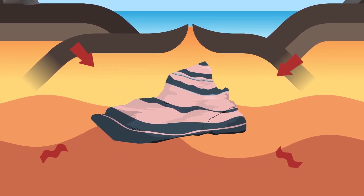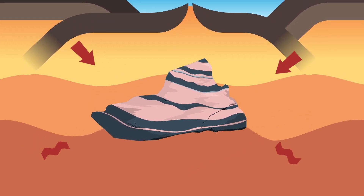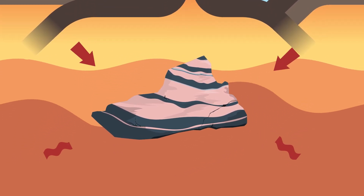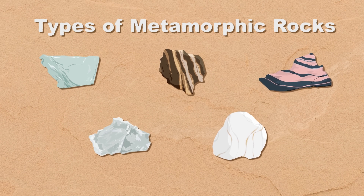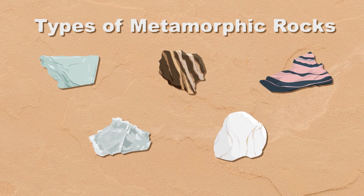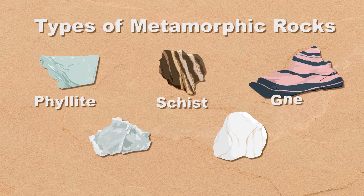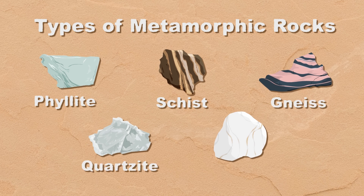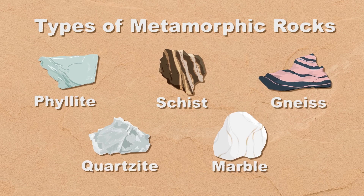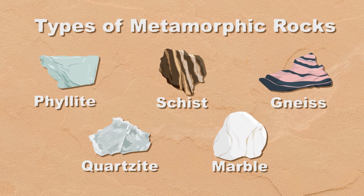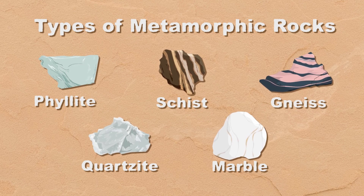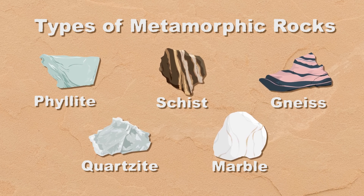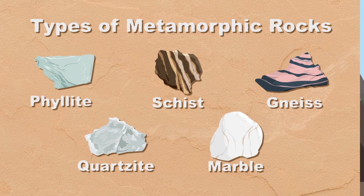If the rock does not melt, it will be transformed. Extreme heat and pressure can change a rock's face deep in the earth. Common types of metamorphic rocks include phyllite, schist, quartzite, and marble. There are a wide variety of metamorphic rocks that can be found in nature, and they are created deep underground.